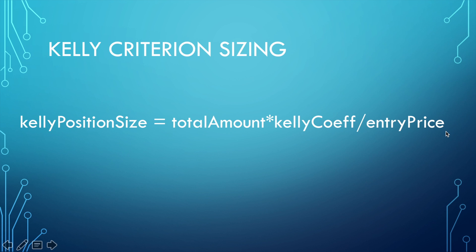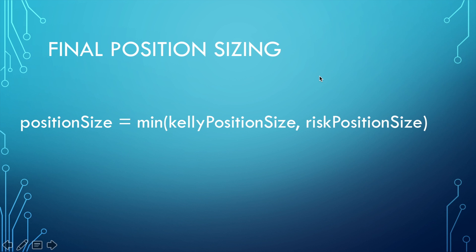Because we use two different methodologies for position size calculation, the Kelly position size and the risk position size will provide different numbers. For the final position size, we compare the Kelly position size and the risk position size and pick the smaller number. In this way we meet all three initial requirements: keeping losses below 1%, dynamic position size calculation according to stop loss value, and using historical performance for position size calculation.